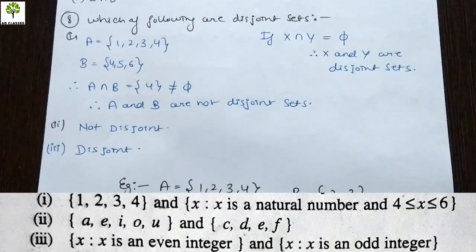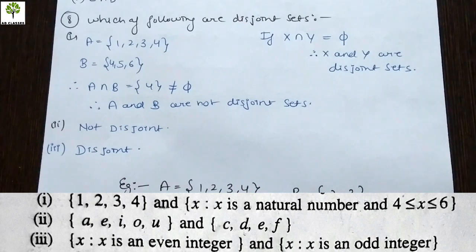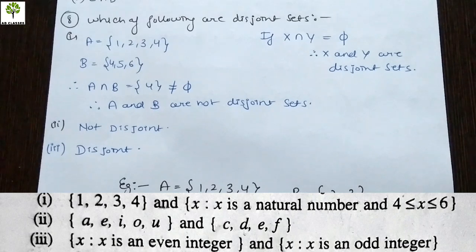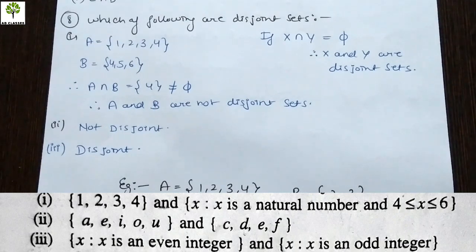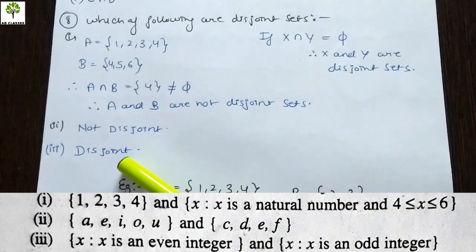Integers include numbers like negative 2, negative 1, 0, 1, 2, 3, 4 and so on. When we talk about even integers and odd integers, there is no common element between them at all. So we can say the sets of even integers and odd integers are disjoint sets.